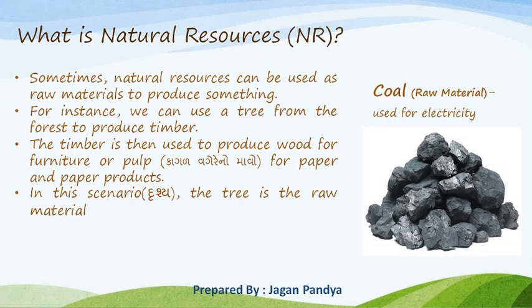For example, coal is a raw material used for electricity — coal is a raw material used to produce electricity.